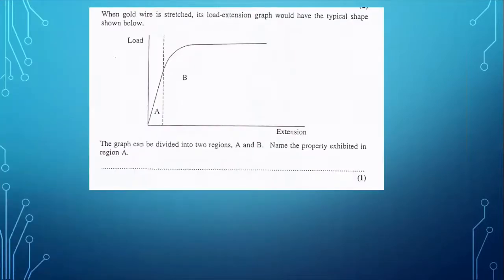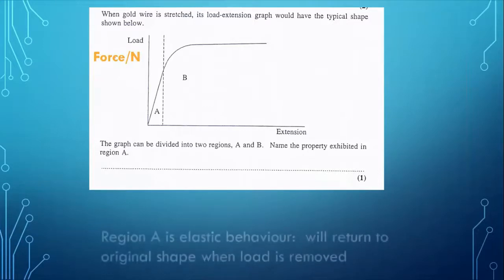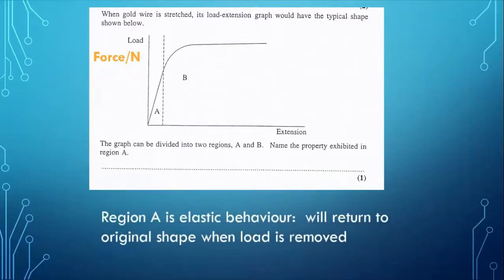Now, when the gold wire is stretched, its load extension or force extension graph would have this kind of shape shown below. And we're asked to name the property exhibited in region A. Well, in region A, isn't it essentially a straight line? Force extension graph is a straight line. It would appear to obey Hooke's law. And yes, region A is elastic behavior. It will return to its original shape when the load is removed, much like an elastic band would do.